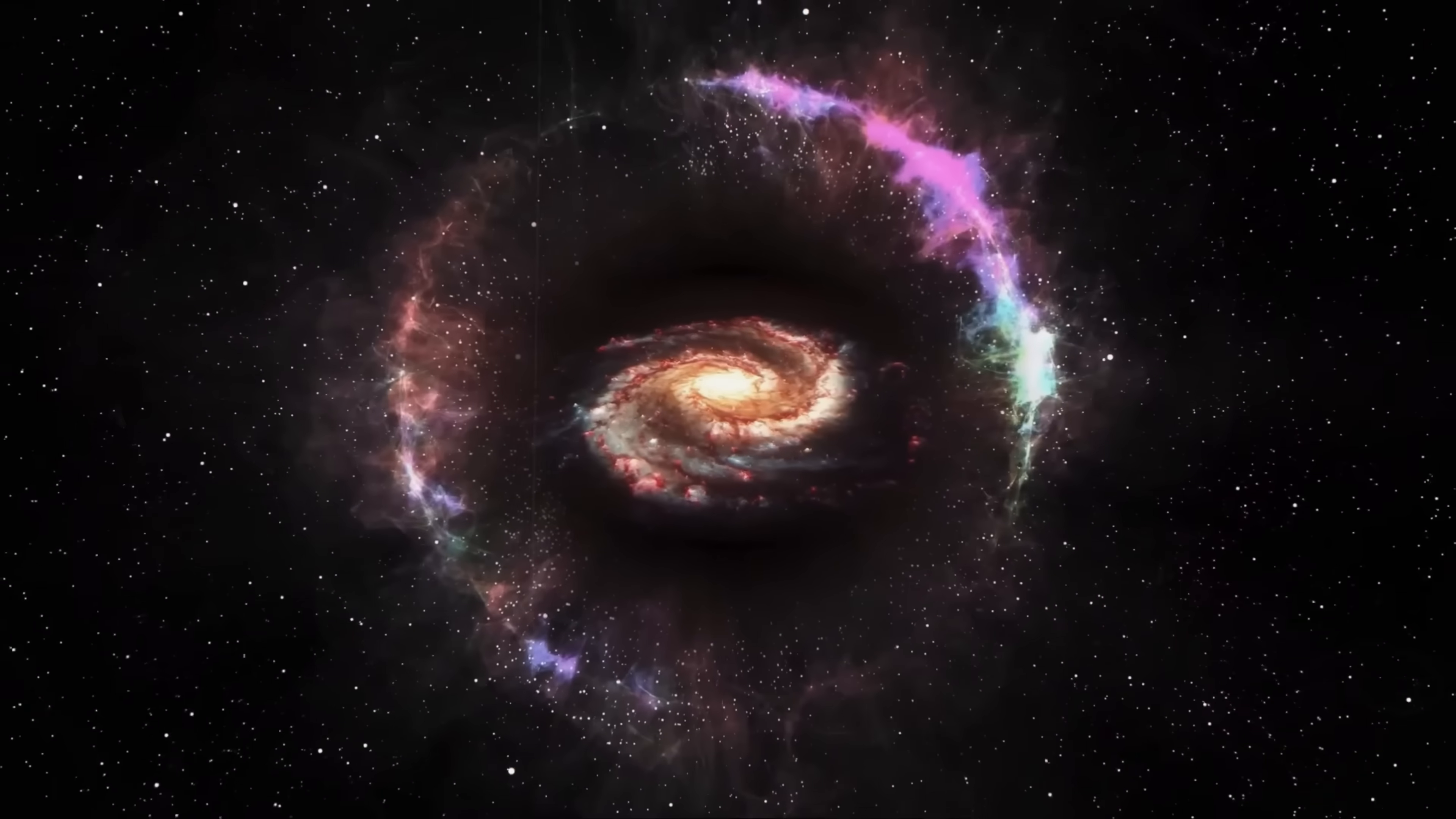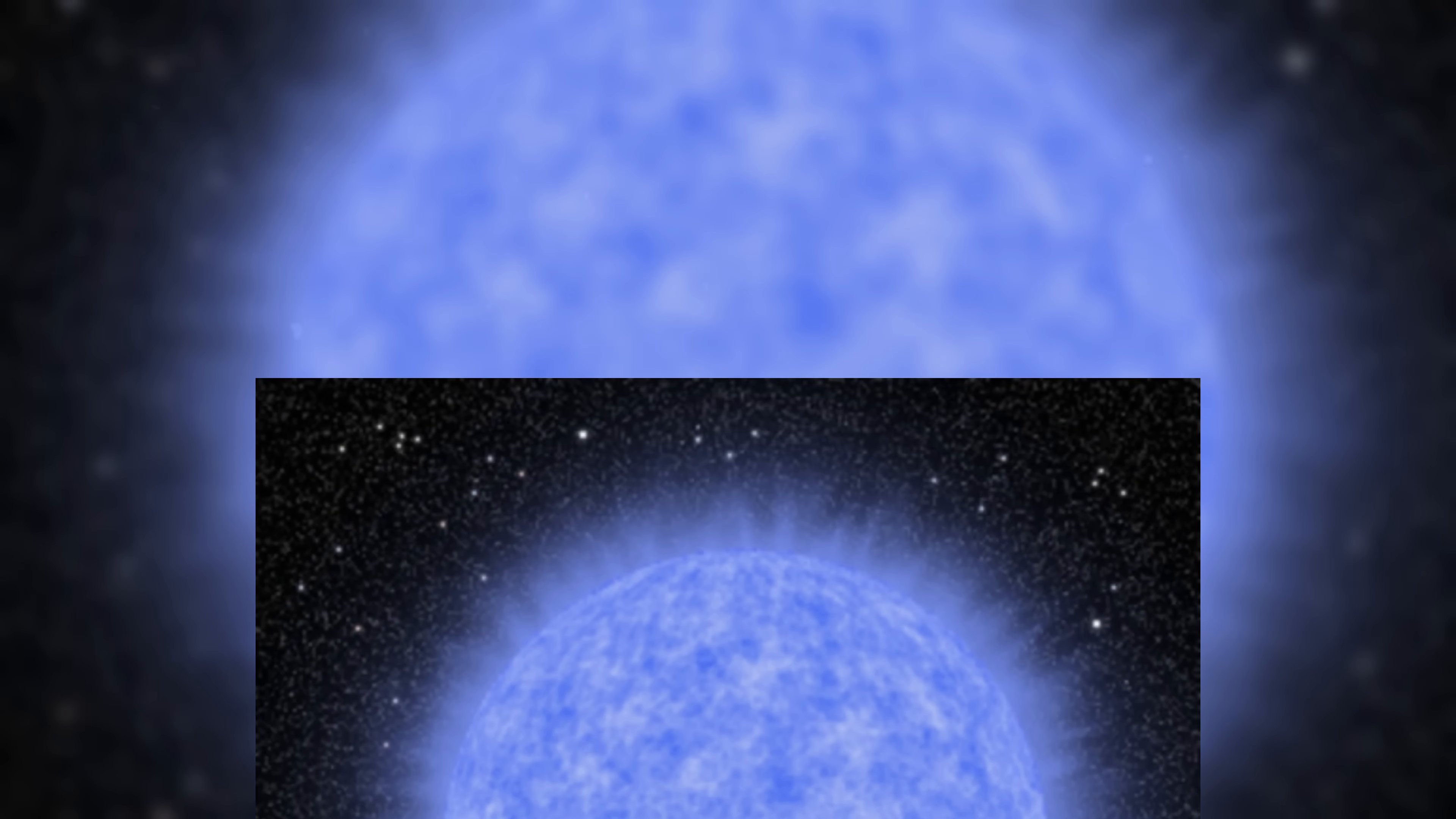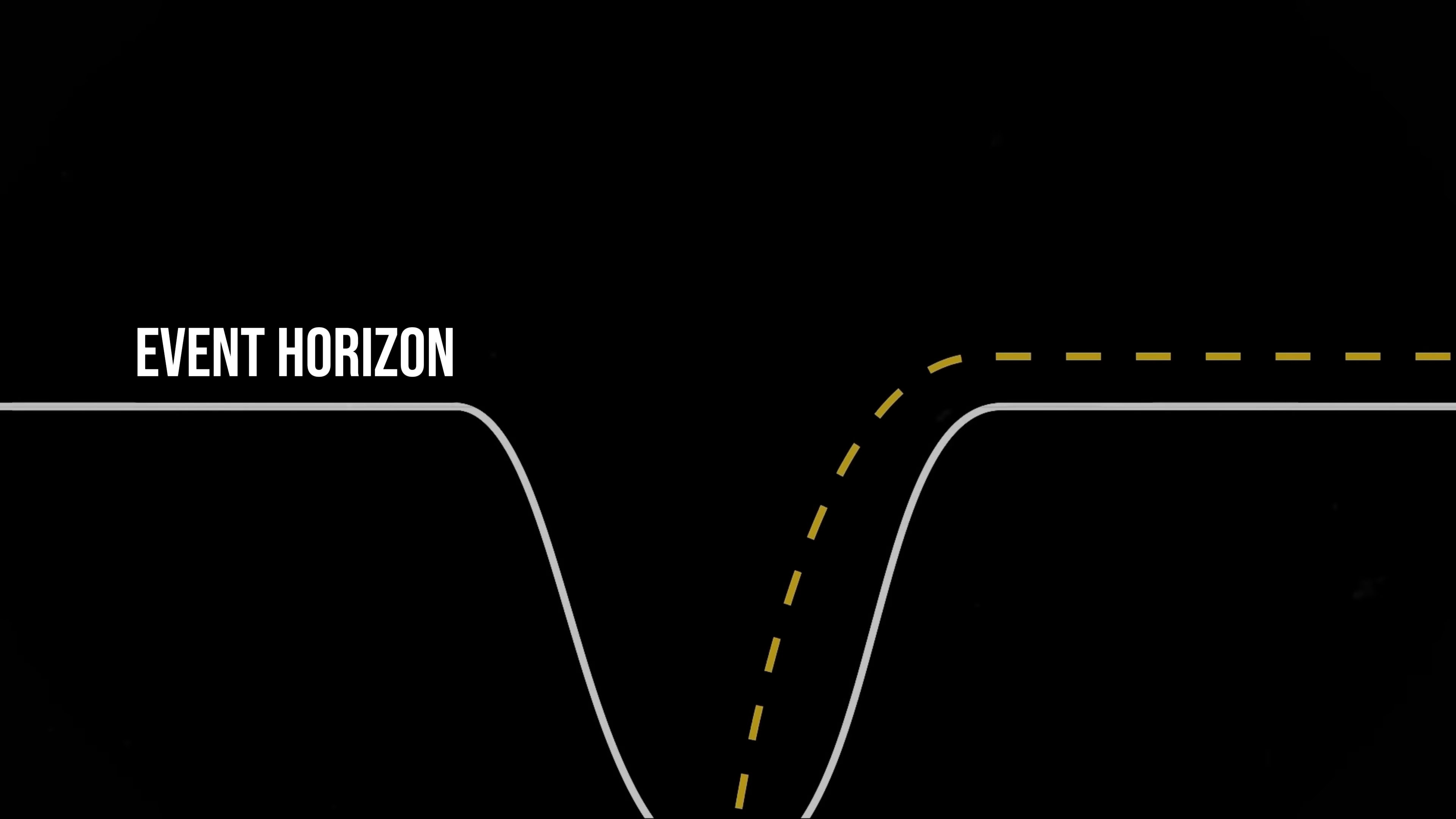Our universe might exist inside a black hole. To grasp this possibility, we must explore black hole physics. When a massive star collapses under gravity, it forms a black hole with an event horizon, a boundary beyond which nothing can escape. But what happens inside this event horizon is still one of the greatest unknowns in physics.